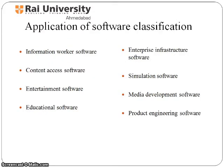There are many application software available. An application suite consists of multiple applications bundled together. They usually have related functions, features, and user interfaces and may be able to interact with each other. Enterprise software addresses the needs of an entire organization — processes and data flow across several departments, often in a large distributed environment.